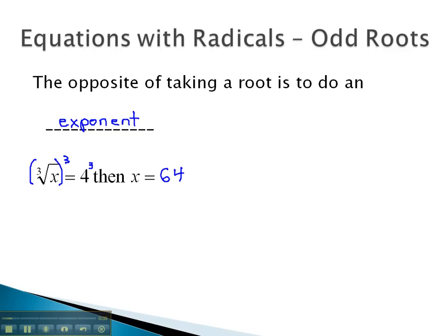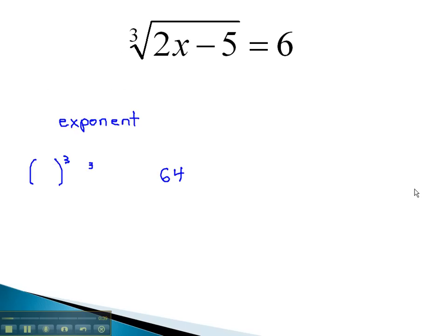Let's take a look at some more involved problems that require us to get rid of an odd root by using an exponent. In this problem, we have a cube root of 2x minus 5. To get rid of that radical so we can access the inside part, we do the exponent.